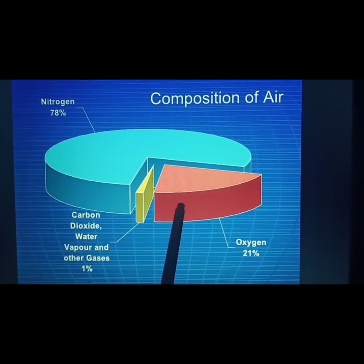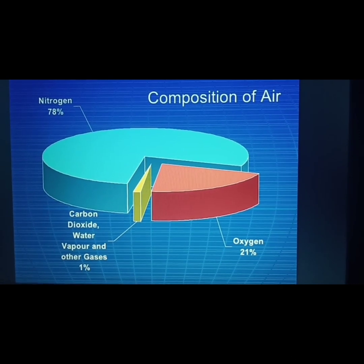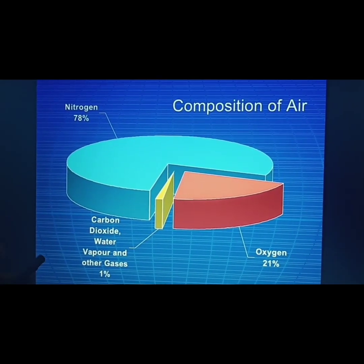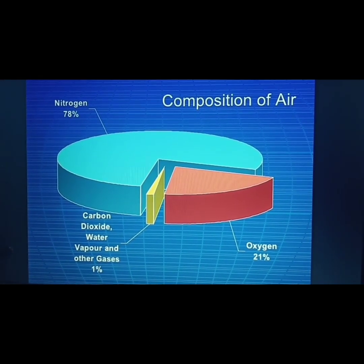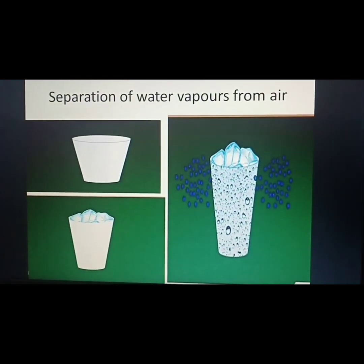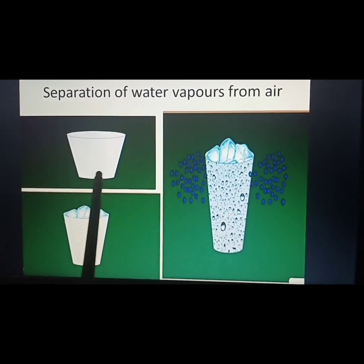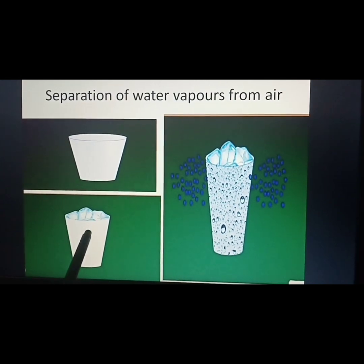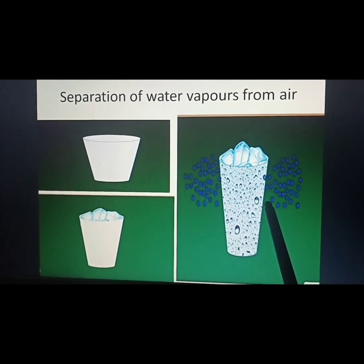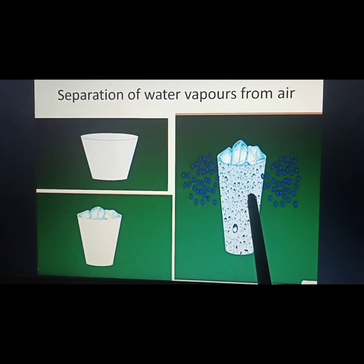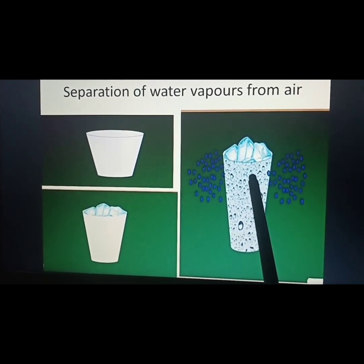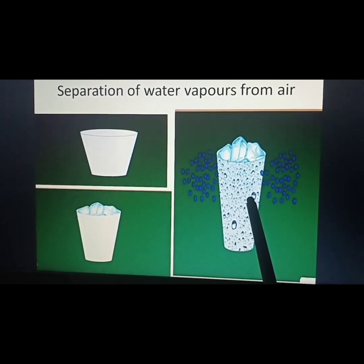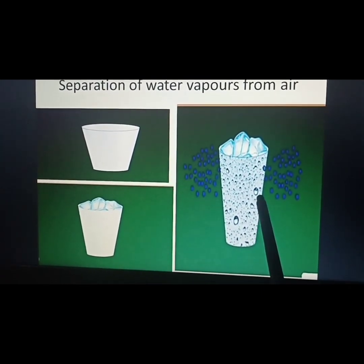You can separate these gases from the air because they are physically combined, not chemically combined. For example, separation of water vapors from air: take an empty glass and fill it with ice cubes. After some time, you will observe little droplets on the surface of the glass. These droplets come from the atmosphere — from water vapors present in the air. This proves that water vapors are present in the air and can be separated this way.